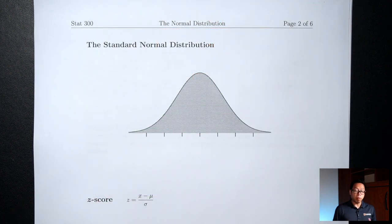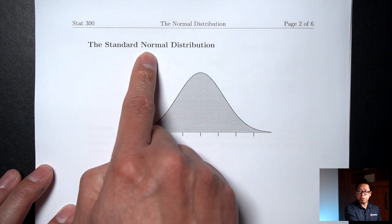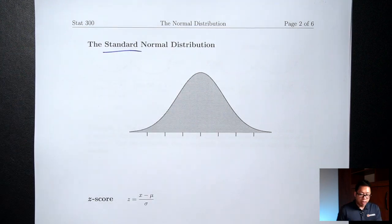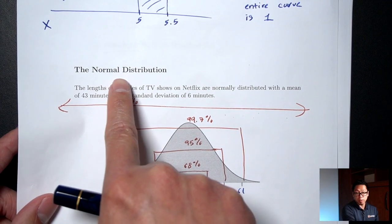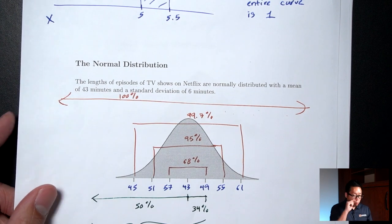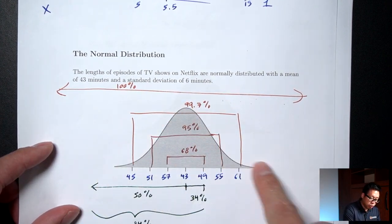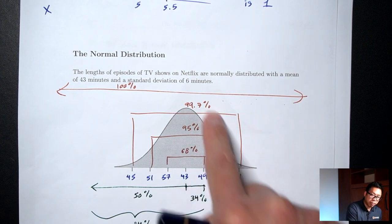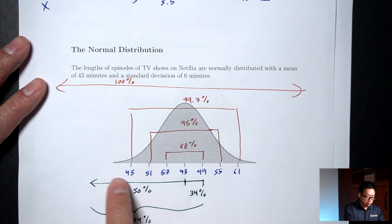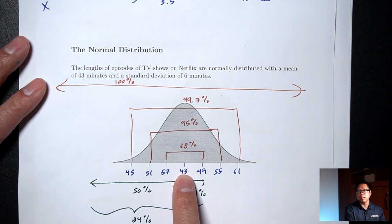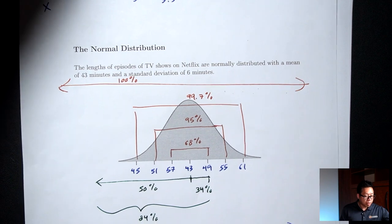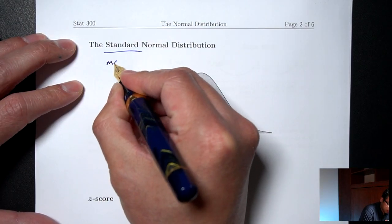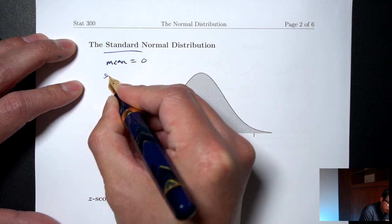There are three tools we'll need today. The first tool is the standard normal distribution. What's the difference between a standard normal distribution and a normal distribution? A normal distribution refers to any distribution that has this bell shape. What will differ are the numbers at the bottom, which have to do with the mean and the standard deviation. Standard just refers to the simplest possible situation where the mean is zero and the standard deviation is one.